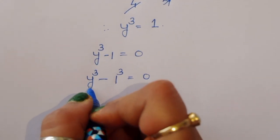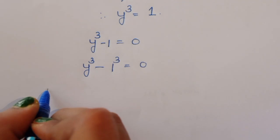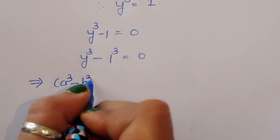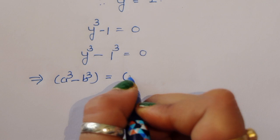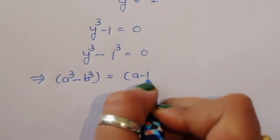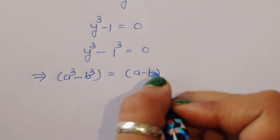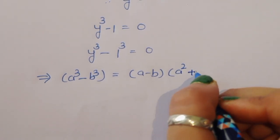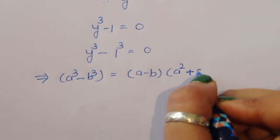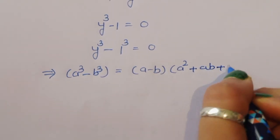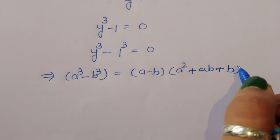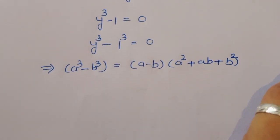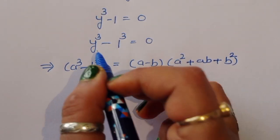This is in the form of the a³ - b³ formula. The formula is: a³ - b³ = (a - b)(a² + ab + b²).